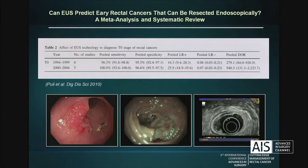Can EUS — endoscopic ultrasonography — predict early rectal cancer that can be resected endoscopically?